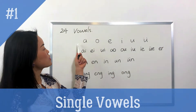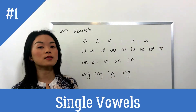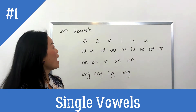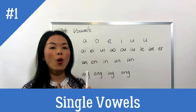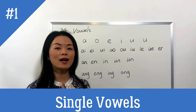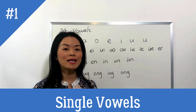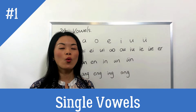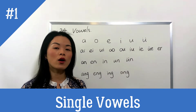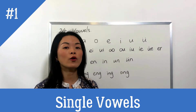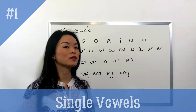So the first six — A, O, E, I, O, U — they are the single vowels.